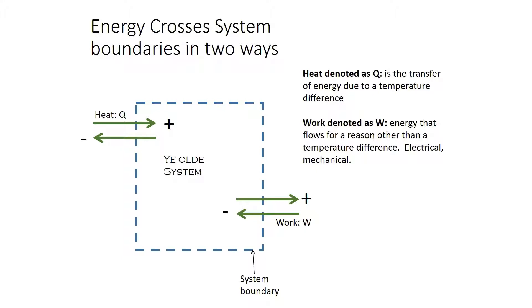Heat and energy cross system boundaries in two ways. Heat and work are how energy crosses system boundaries. If heat is going into the system, it's considered positive; if it's leaving the system, it's considered negative. Work is the opposite — if work is being done to the system, it's negative; if it's being done by the system, it's positive.